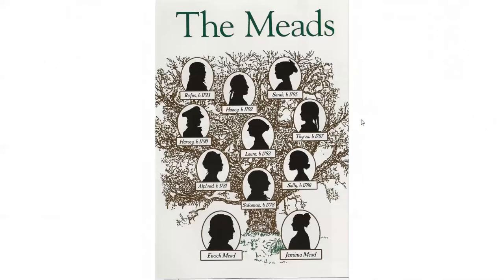We can't think of Wacabuck without talking about the Mead family. The first Meads to settle on Mead Street were Enoch and Jemima, who came by horse from Greenwich, Connecticut on their honeymoon and decided to settle in the western part of town. One earlier Mead was Solomon Mead, great uncle of Enoch, who was the first pastor of the Presbyterian church and came to town in 1752.